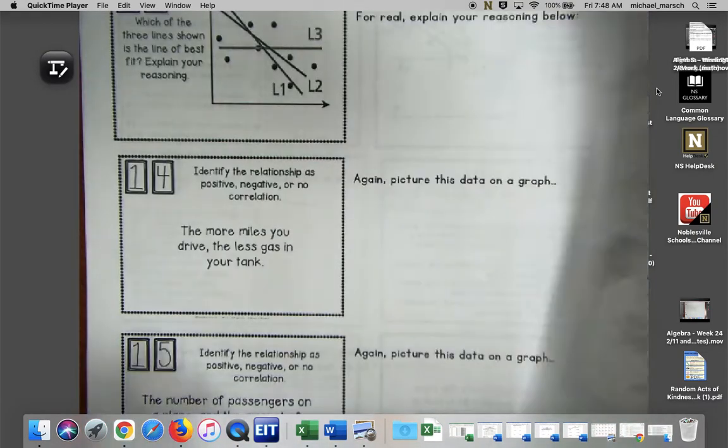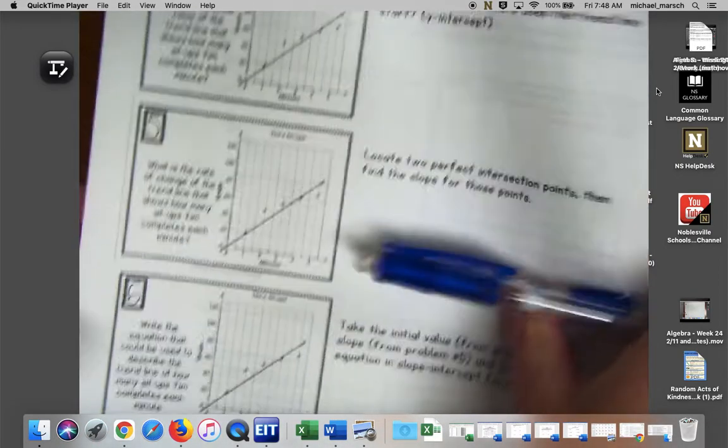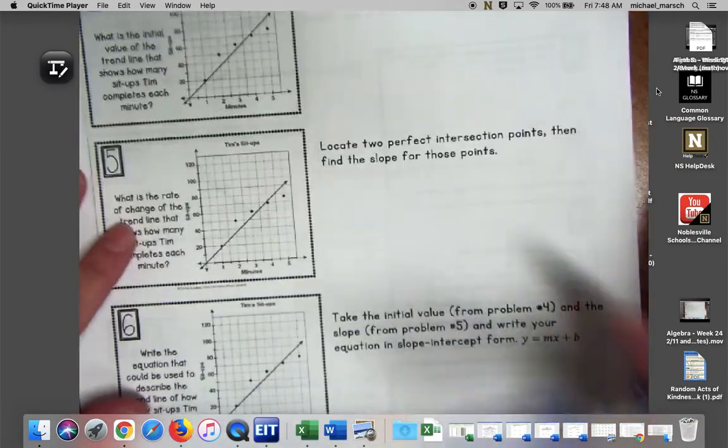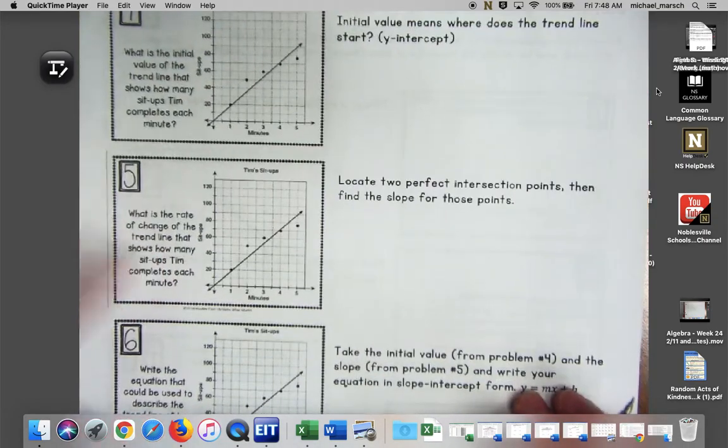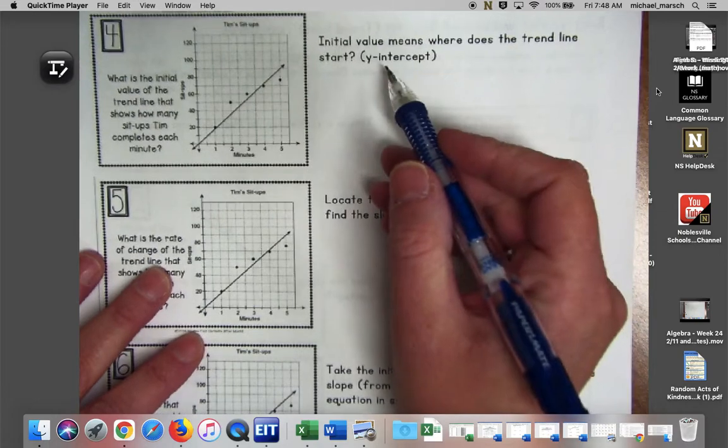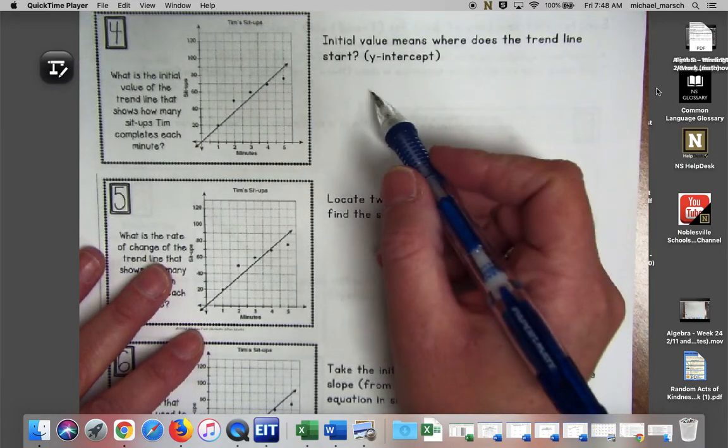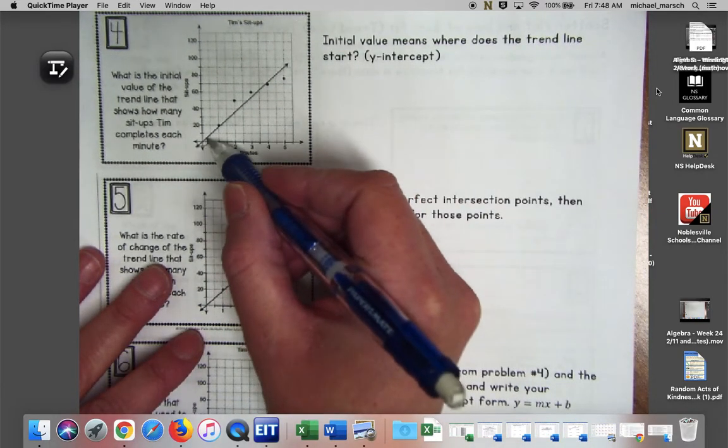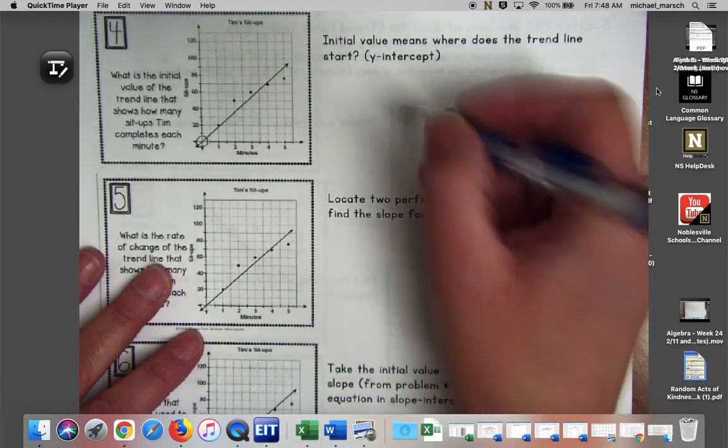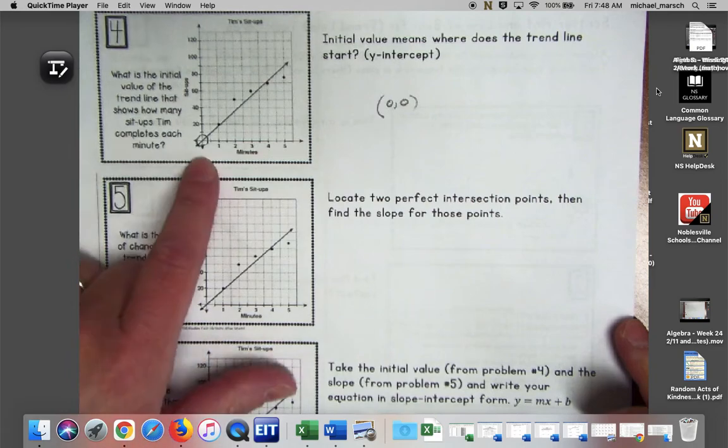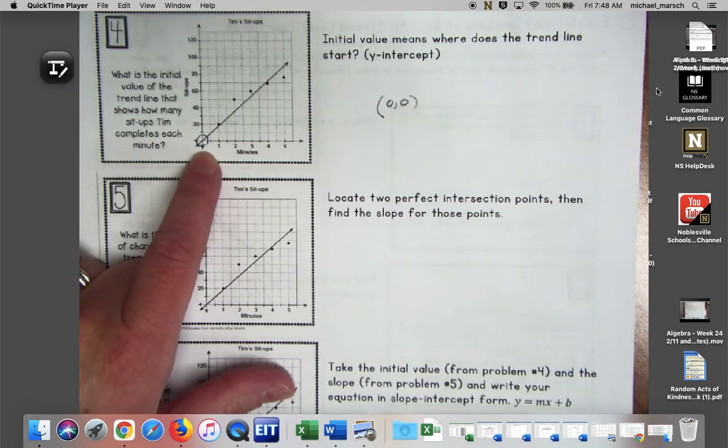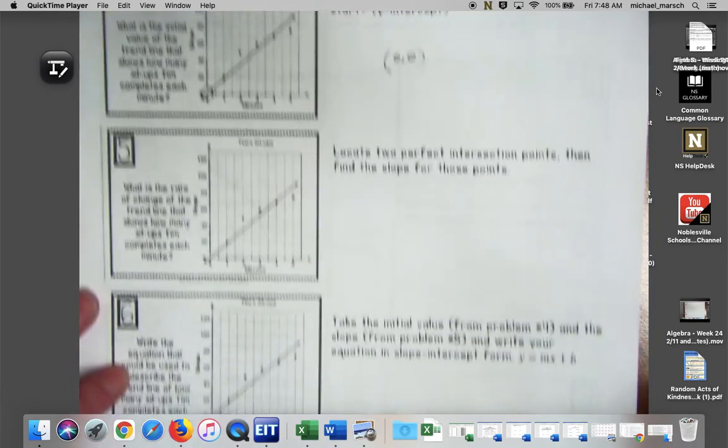Question four says what is the initial value of the trend line that shows how many sit-ups Tim completes each minute? Initial value means where does the trend line start. Our y-intercept is our initial value, so we would say zero, zero is our answer there, because if he hasn't started he hasn't done any sit-ups.